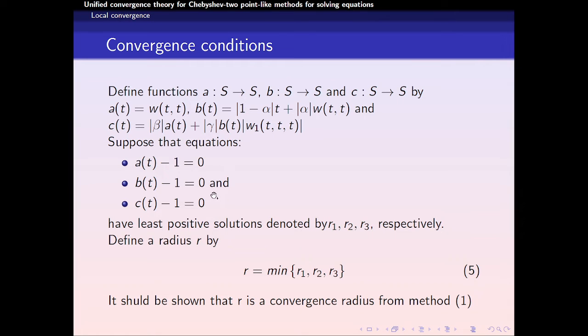Positive solutions denoted by R₁, R₂, and R₃ respectively. We are going to define a radius R in this form. R is equal to the minimum of three solutions of these three equations. It should be shown that R is the convergence radius from general method, method 1.